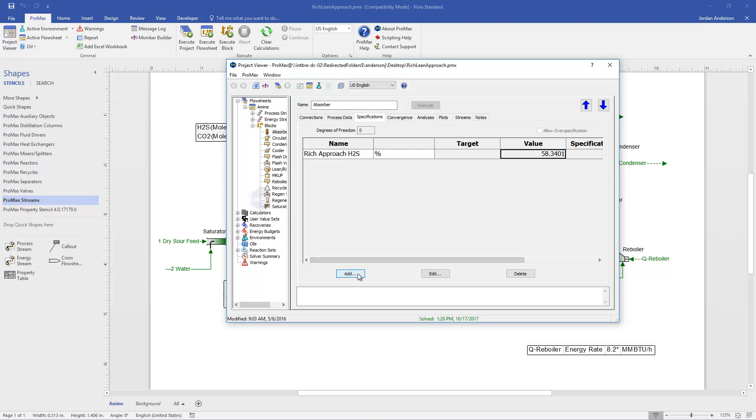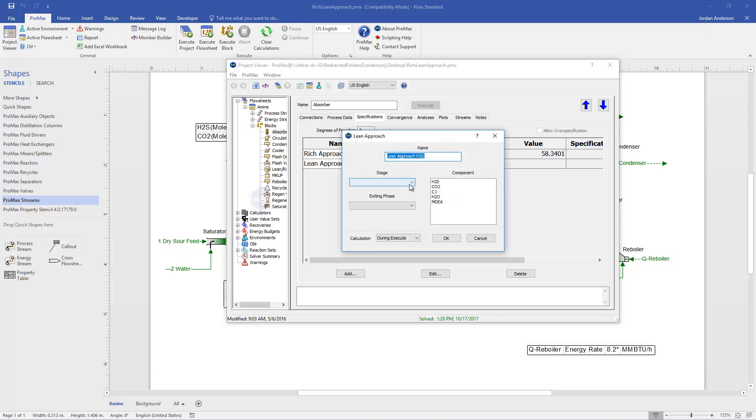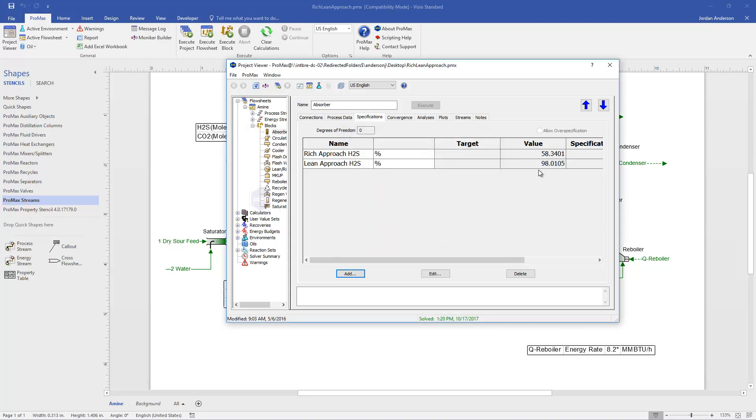Let's calculate our lean approach now. If I click Add and choose the lean approach option, I will do that for H2S as well and click OK. Now it's going to ask me which stage is the lean stage, which will be my top stage, and what type of phase I have coming out of my contactor or my absorber, which is vapor. And then it's H2S again. When I click OK,